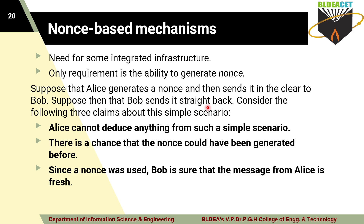Suppose Bob sends straight back whatever nonce it received from Alice instead of generating its own. In that case, Alice can't deduce anything from such a simple scenario. If Bob sends the same nonce back to Alice, there is no reaction, because it is just an acknowledgement. The freshness is not provable here — there is a chance the nonce could have been generated before.